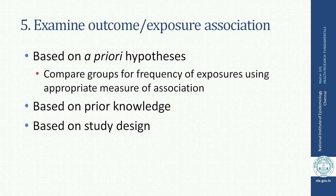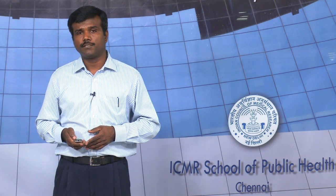Fifth is examining the outcome and exposure association — this is the most interesting part. This is based on an a priori hypothesis where you compare groups for frequency of exposure using an appropriate measure of association, which has to be based on prior knowledge and study design, since each study design has its own measurement of association for the specific exposure and outcome. You may also apply principles around biases and confounding that can complicate this association.